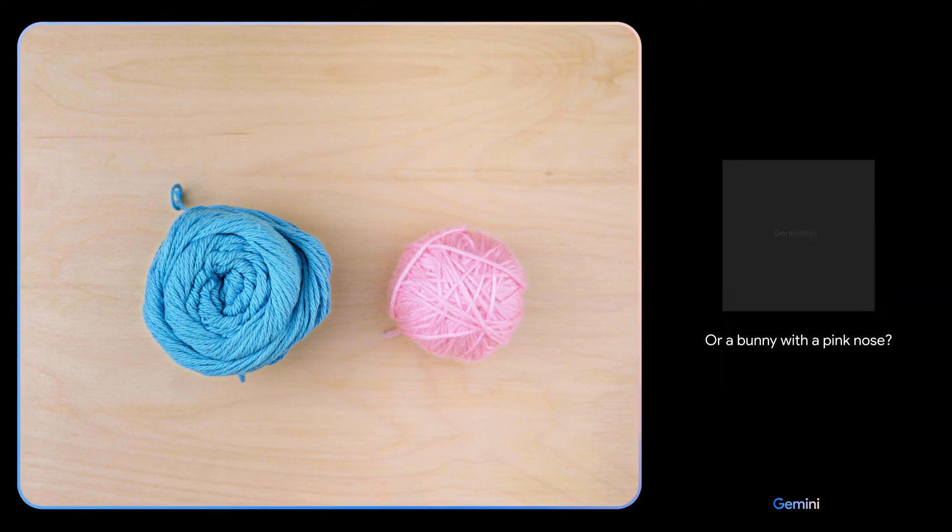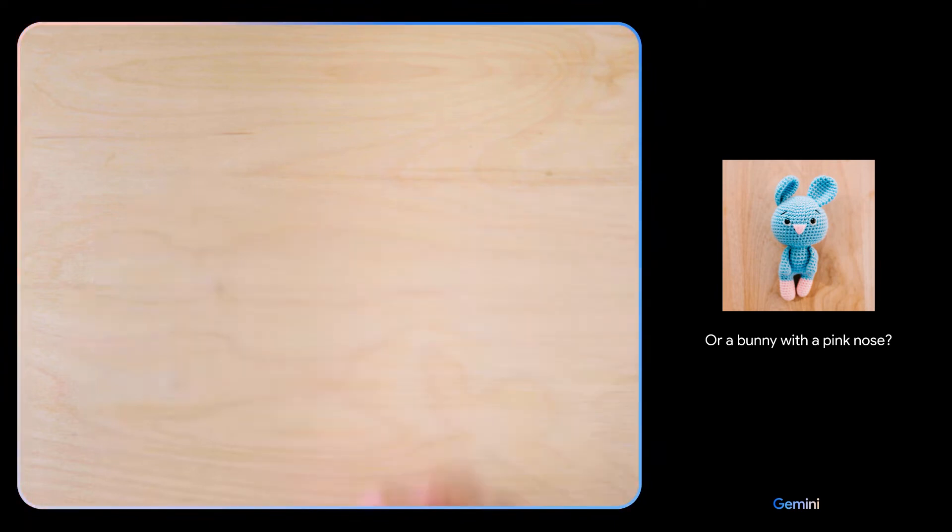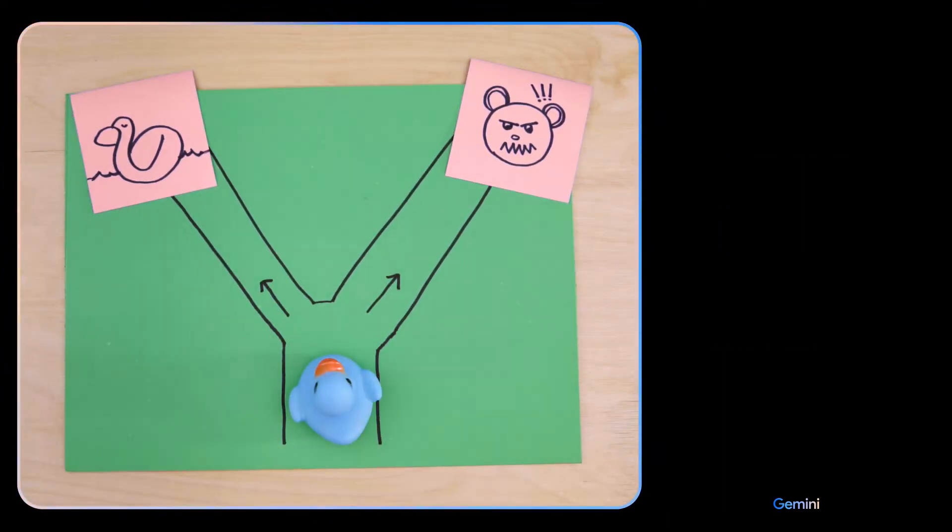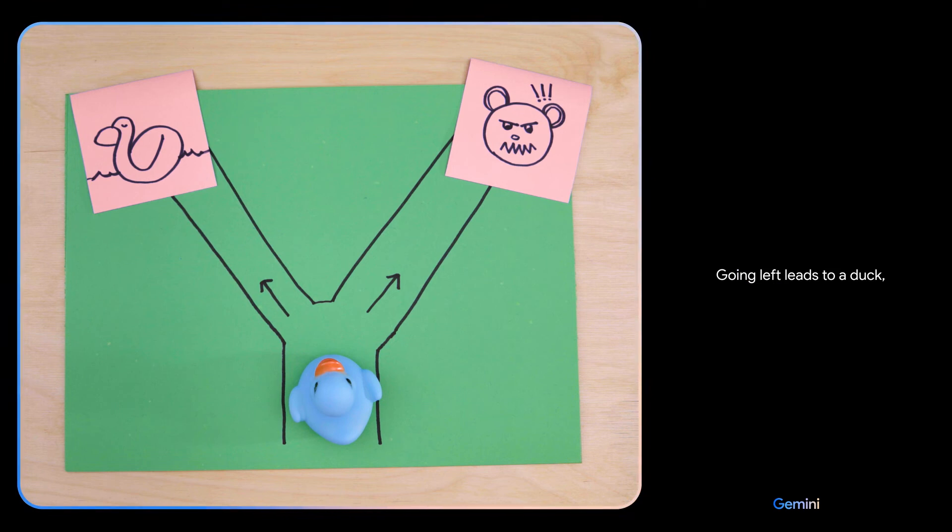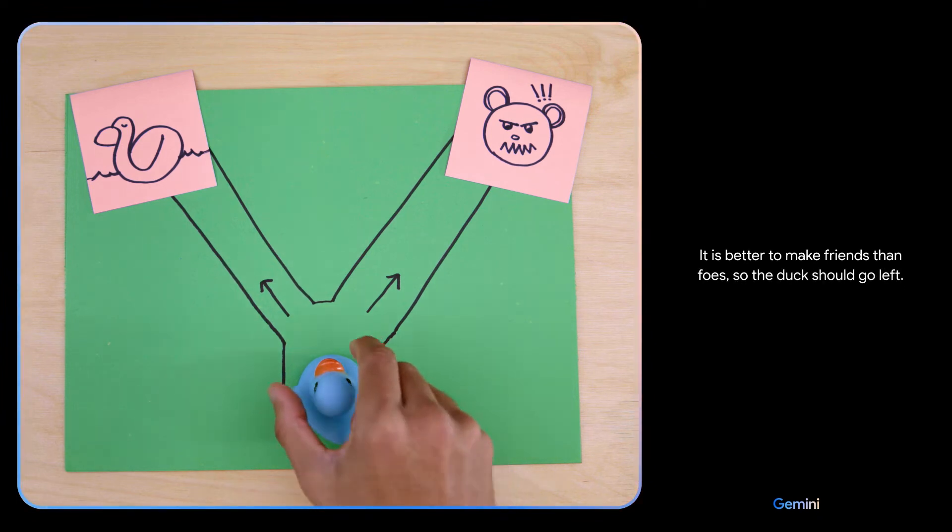Which way should the duck go? Going left leads to a duck which is a friend. Going right leads to a bear which is a foe. It is better to make friends than foes so the duck should go left. Smart choice.